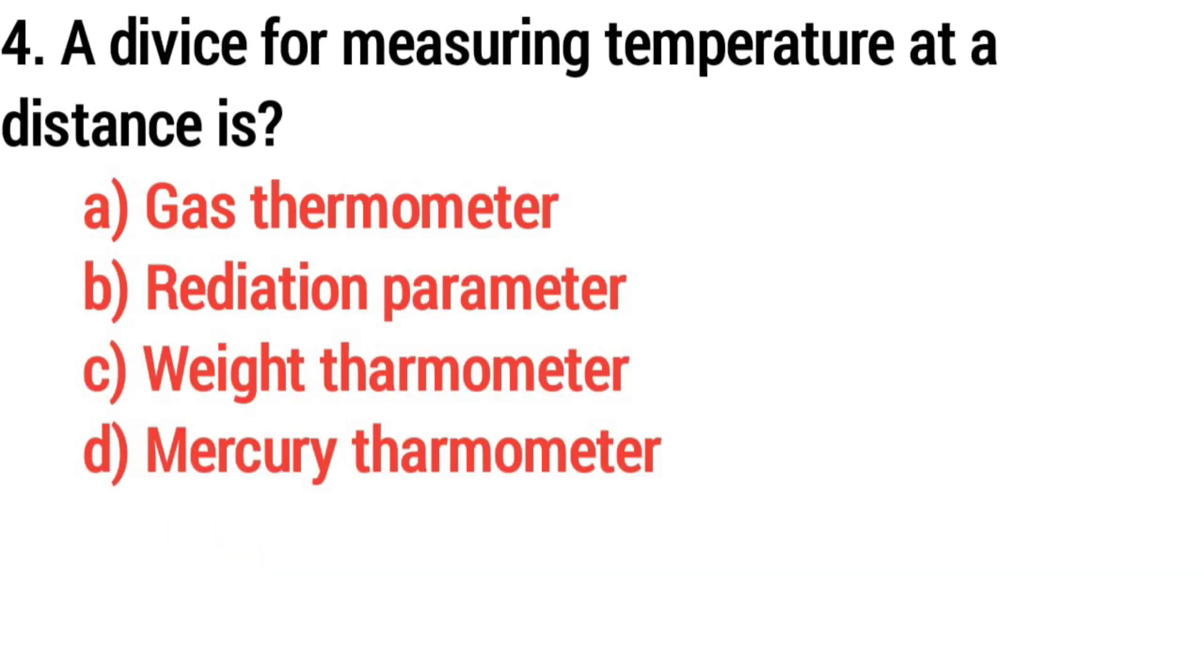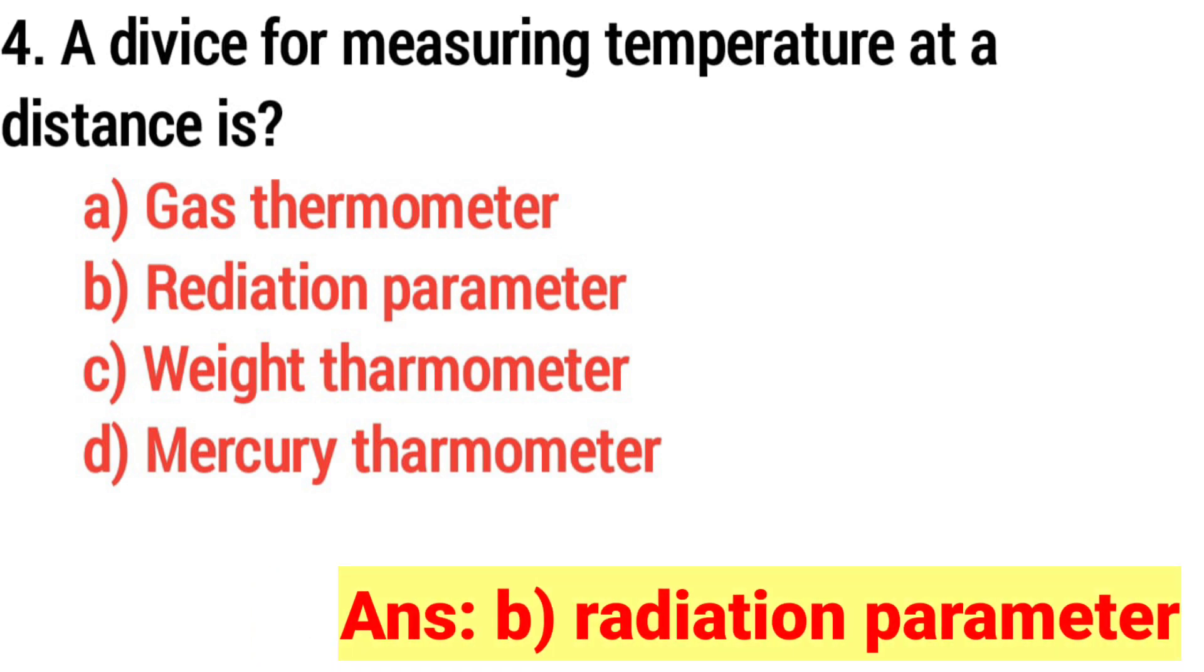Question 4. A device for measuring temperature at a distance is? Answer: Option B, Radiation parameter.